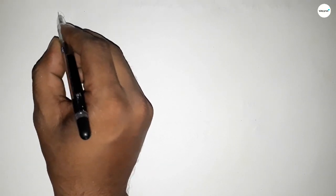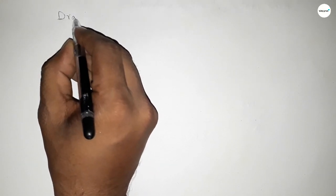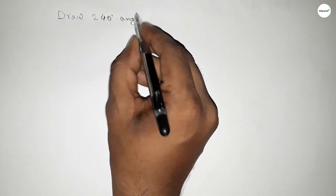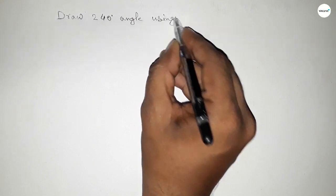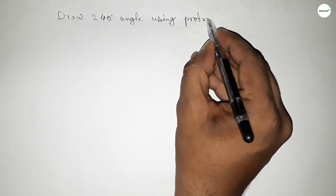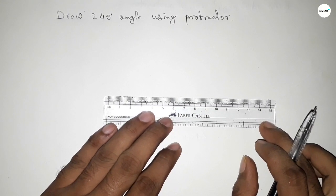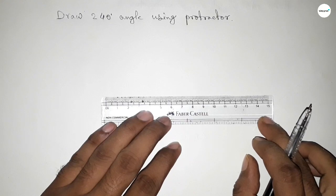Hi everyone, welcome to SSR Classes. Today in this video, we have to draw a 240-degree angle using a protractor. Constructing a 240-degree angle, so let's start the video. First of all, we have to draw a straight line.